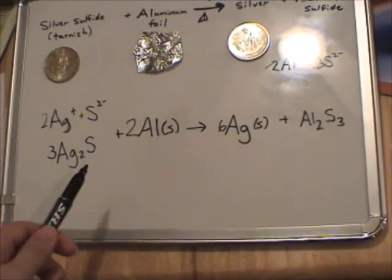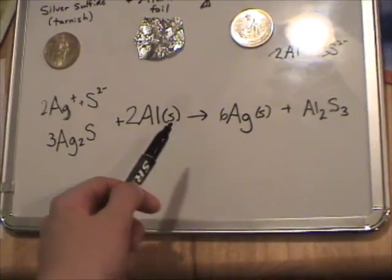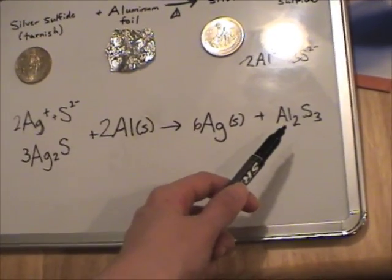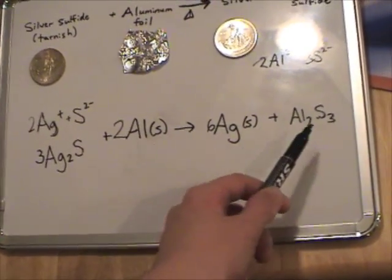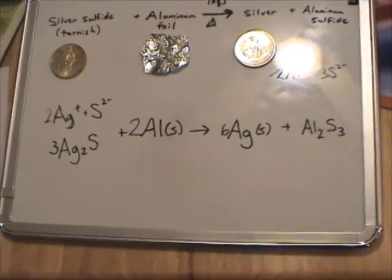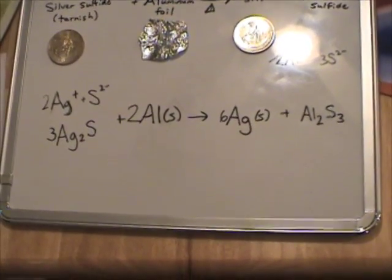And now let's check. We've got six silvers, six silvers, two aluminums, two aluminums, three sulfurs, three sulfurs. Alright, we're good. We have a balanced equation for this reaction.